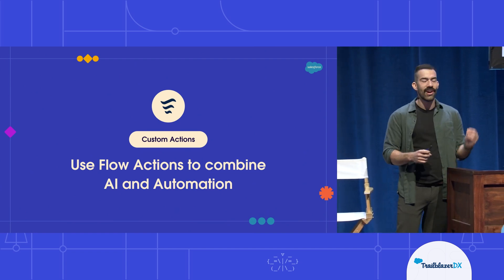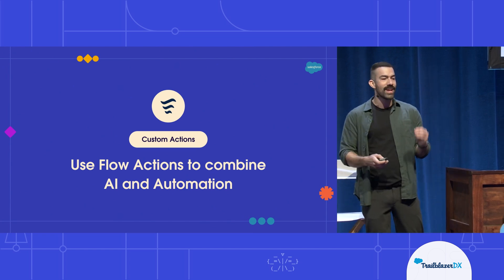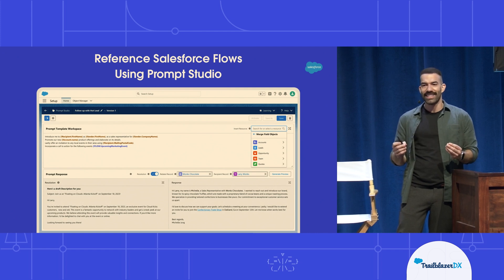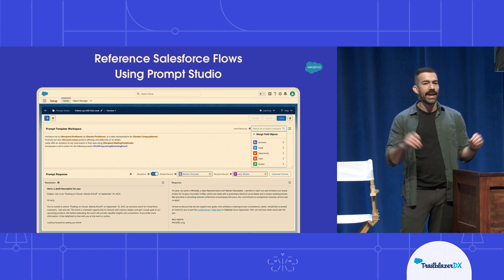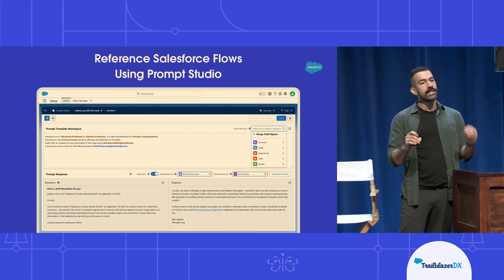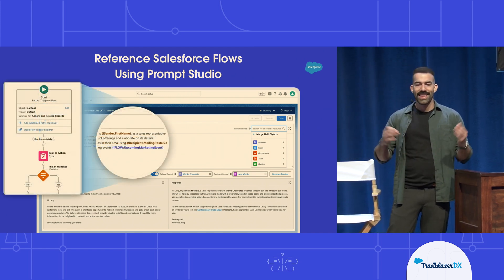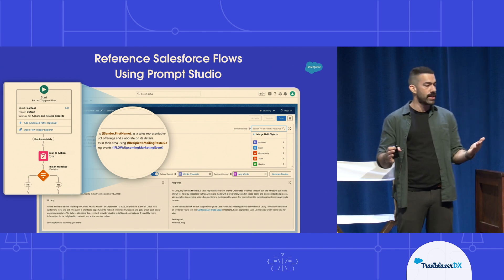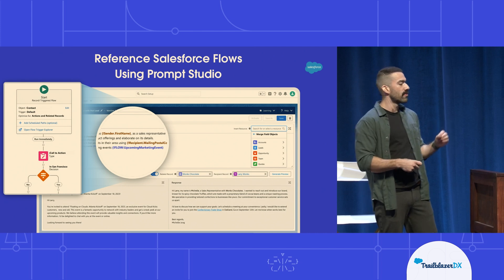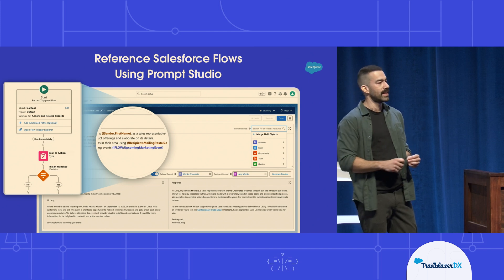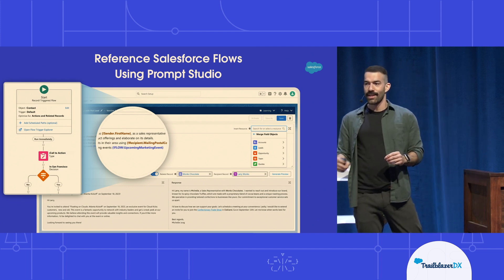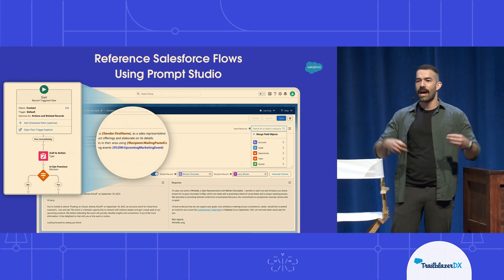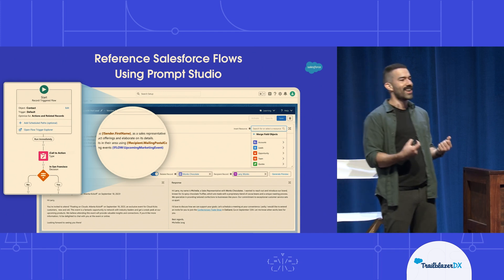Now I want to show you the flow action type, because this is where things start getting really powerful. Let's go back to that prompt template I showed you earlier. Imagine that my company is hosting a marketing event in San Francisco and I want to include a call to action in the email only to recipients that live in the Bay Area. In this scenario, I can leverage the power of Salesforce flows with prompt templates. In Flow Builder, I already have an action flow for this event and I can reference this flow directly in the prompt instructions, instructing Einstein to include the call to action only if the zip code matches Bay Area locals. Now you can start to see how gen AI and automation can work together.